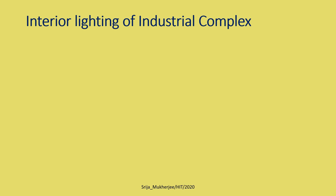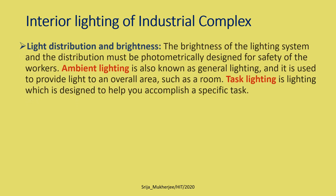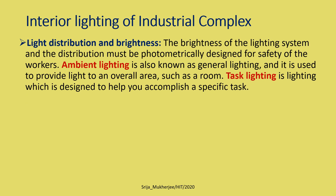For the interior lighting of an industrial or office complex, the first important consideration during design is light distribution and brightness. The brightness of the lighting system and its distribution must be photometrically designed for the safety of the workers.